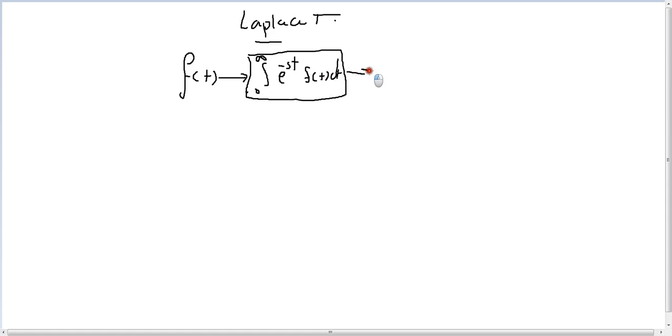After that, the function will be Laplace. So now the function has been transformed into Laplace transform. For example, if I want to get Laplace transform of constant C, this C could be one, two, three, and so on.